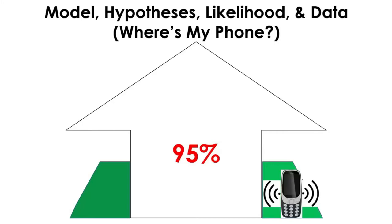Hypothesis testing is very similar to this process of finding the location of a lost phone. You have a pair of hypotheses about the possible location of the phone. Based on your mental model of the house and surroundings, you know how likely each hypothesis will be true. For example, you assigned a 95% chance that you will find your phone in the house, so it is highly unlikely you will find it outside — which is why you assigned a very small fraction of likelihood, in this case 5%, to finding the phone outside.